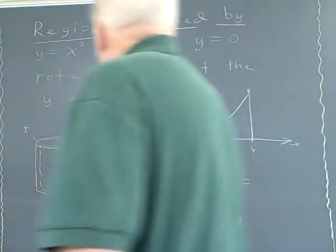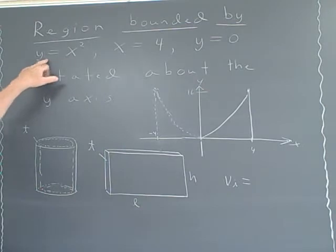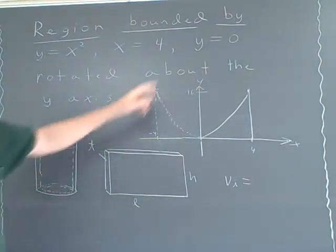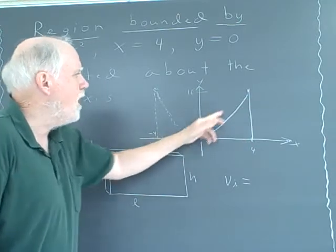In this case, we're going to take the region bounded by y equals x squared, x equals 4, and y equals 0. That's this little region here, this little wedge-shaped region.